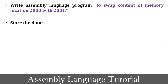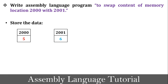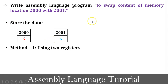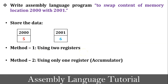As per the definition, first store the data into the memory locations — value 5 into 2000 and value 6 into 2001. I have come up with a surprise: I will solve this program using two different methods. Method 1 uses two registers, and Method 2 uses only the accumulator. Let's discuss both methods in detail.